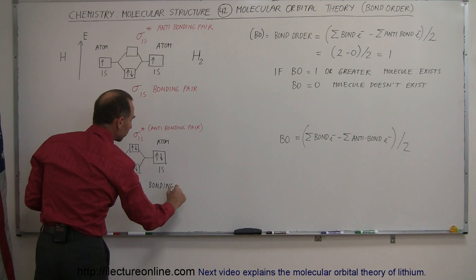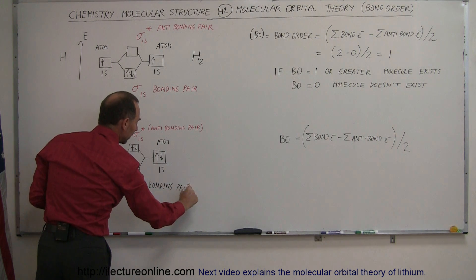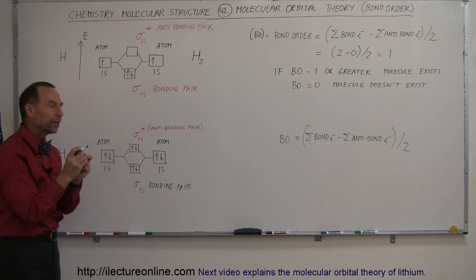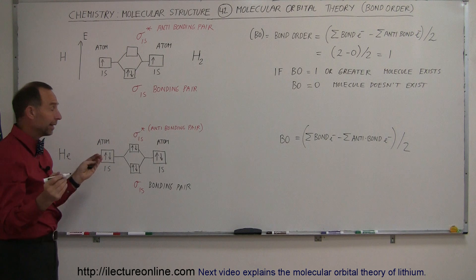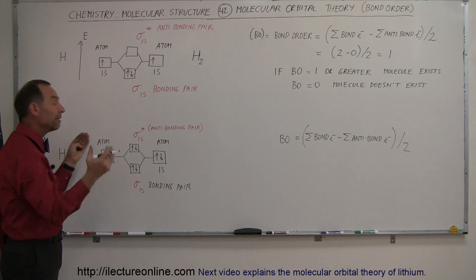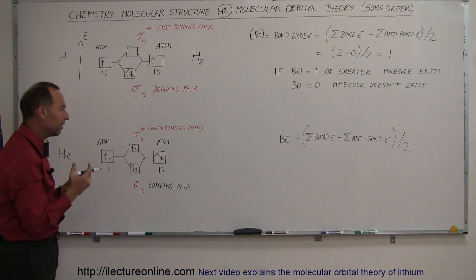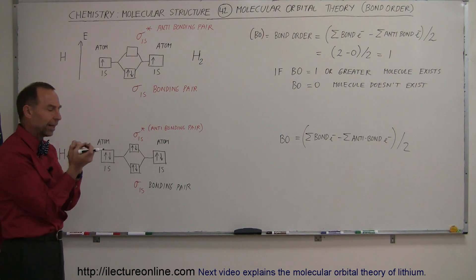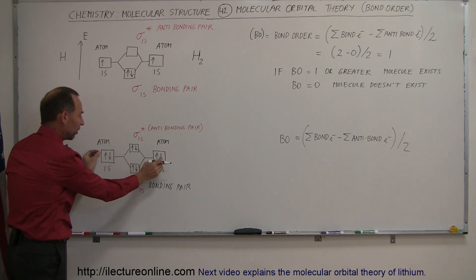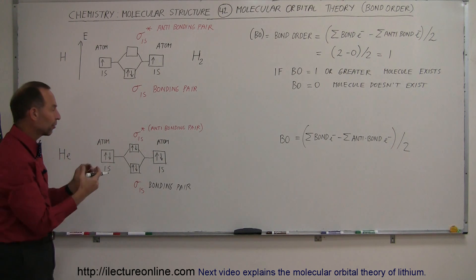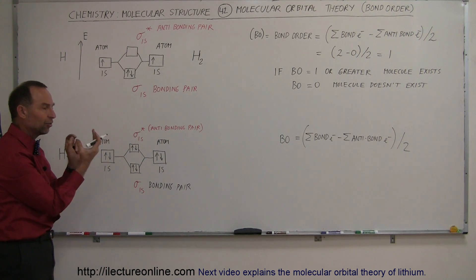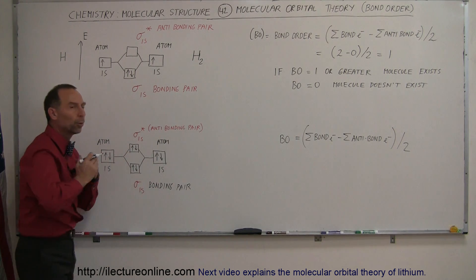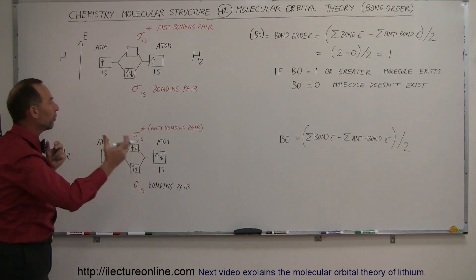But then the next two electrons have no place to go in here, so they go into the next locality where they could exist. However, they're not in phase, they're opposed in phase, and so they kind of cancel each other out, they repel each other. That second pair of electrons that helium brings to the table is not able to form a stable bond. It forms what we call an anti-bonding pair, which causes a repulsive force.